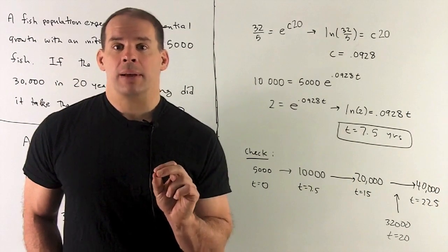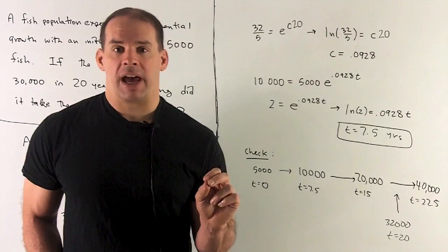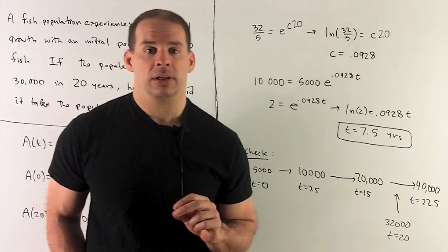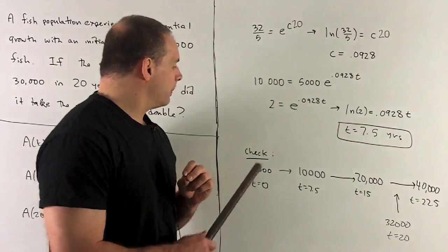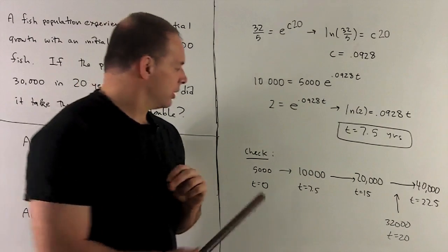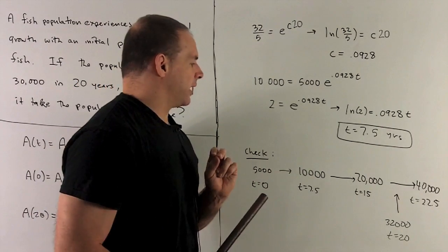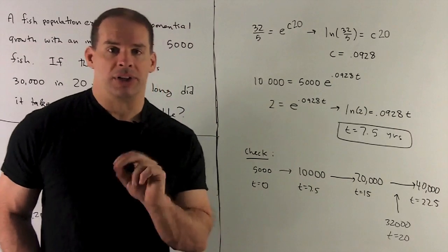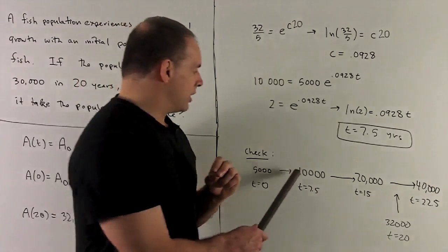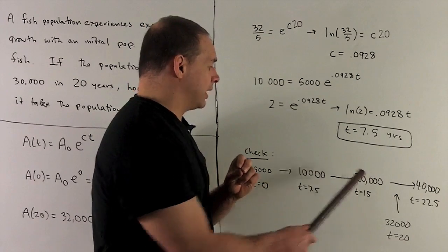Now, let's check that by just taking a few doubling times and see if we can get in the ballpark of that 32,000. So t equals zero, I have 5,000. One doubling time passes, seven and a half years, we double our population to 10,000. Another doubling time passes, that gets us to 15 years. We double our 10,000 to 20,000.